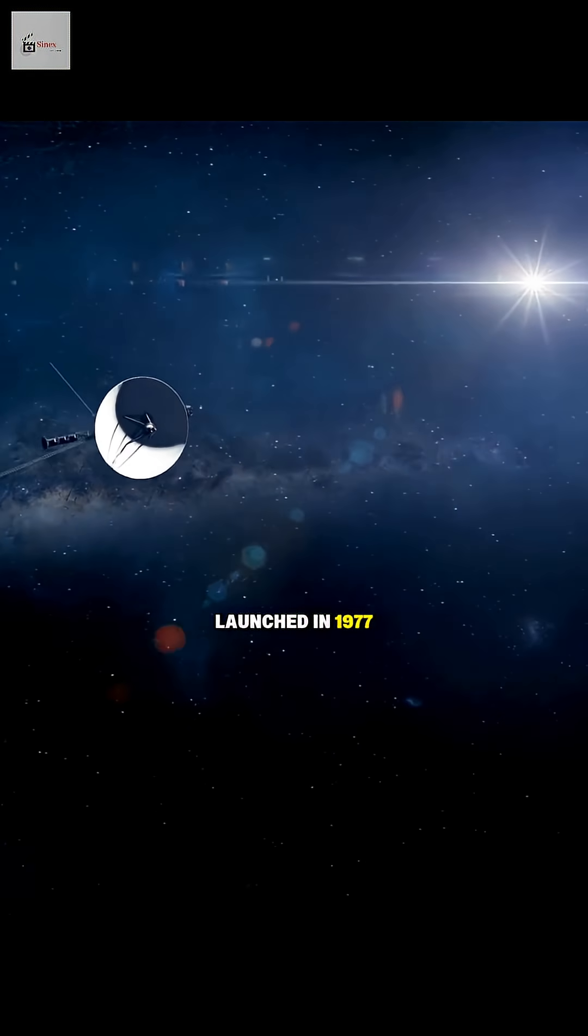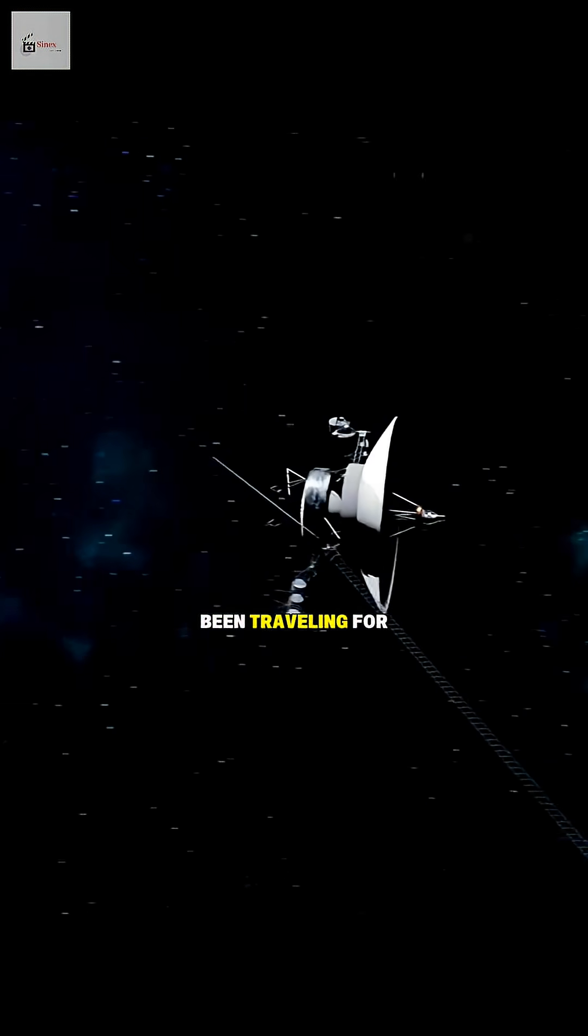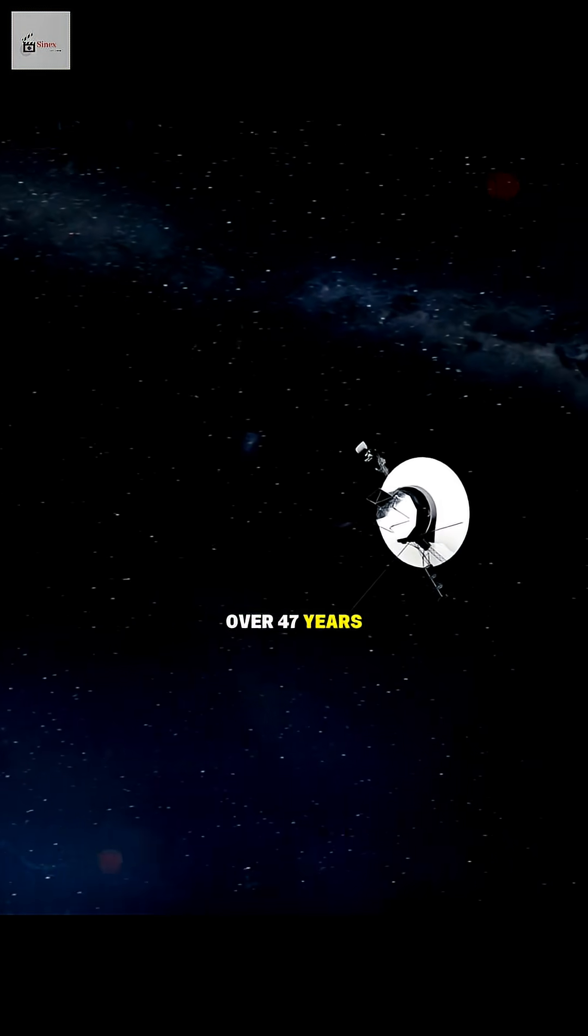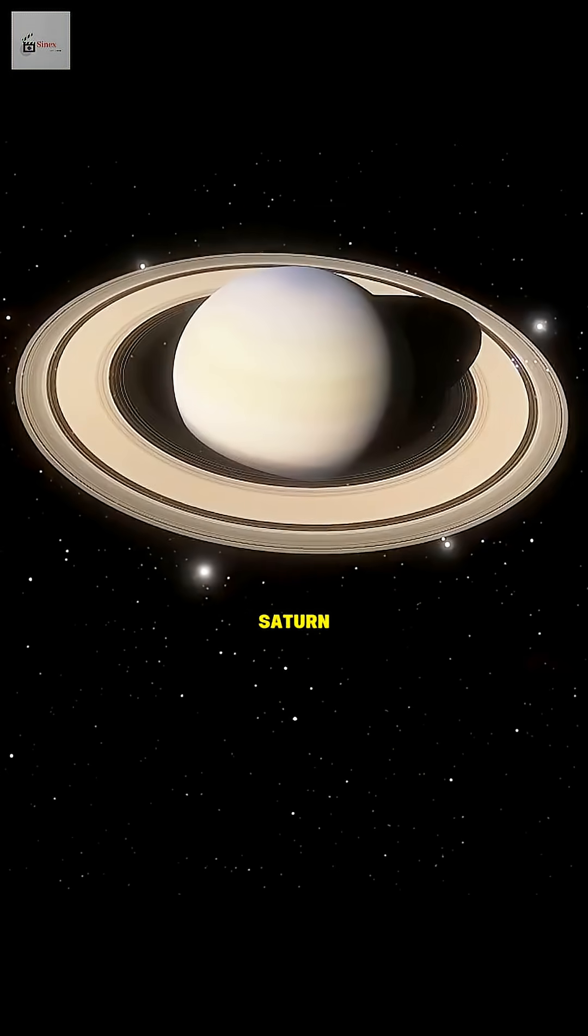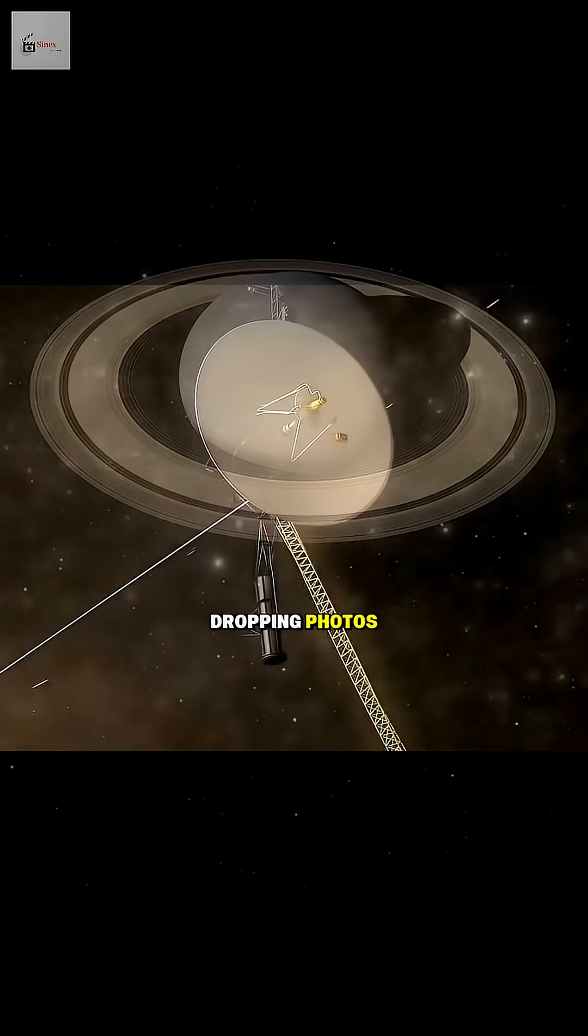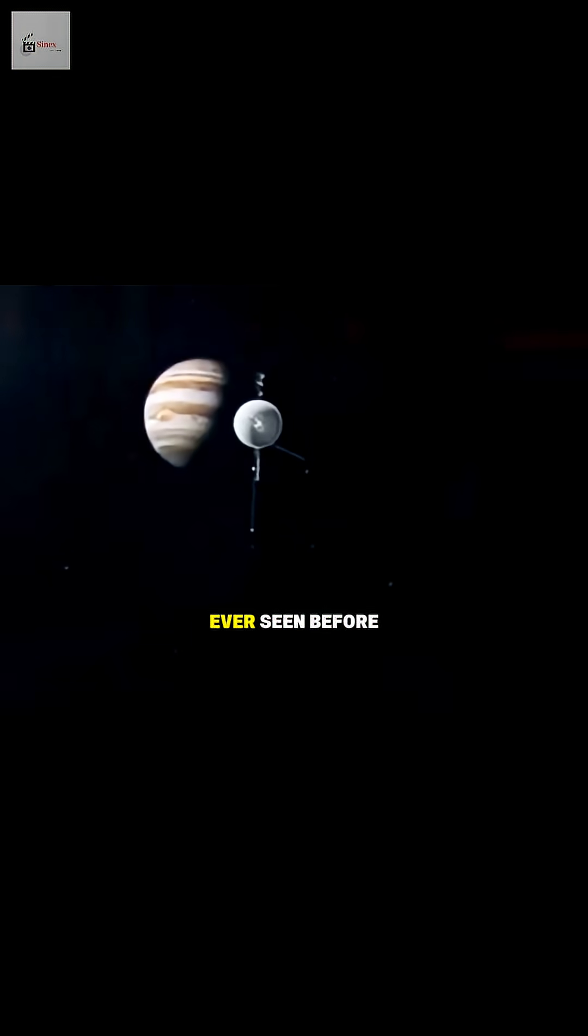Launched in 1977, Voyager 1 has been traveling for over 47 years, and it's still going. It flew past Jupiter and Saturn, sending us jaw-dropping photos no human had ever seen before.